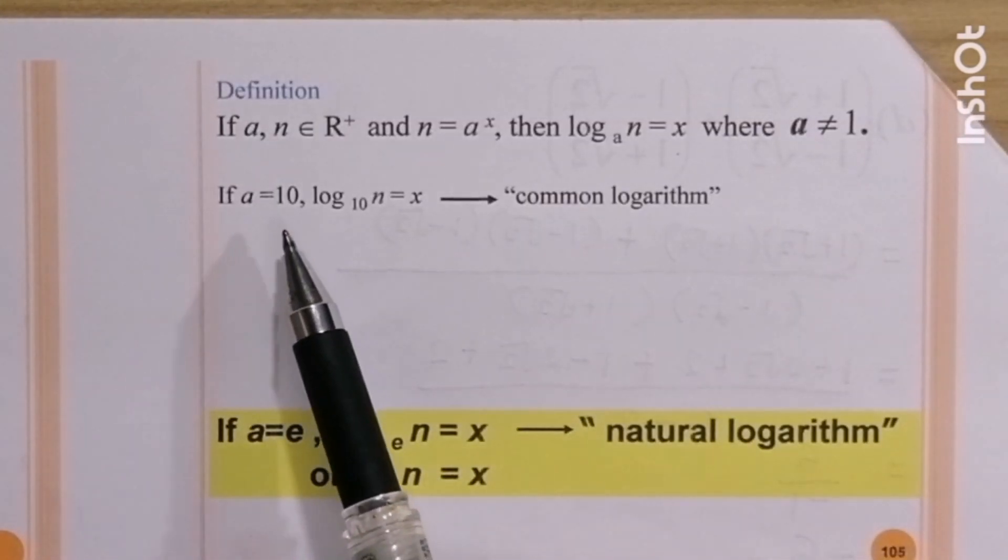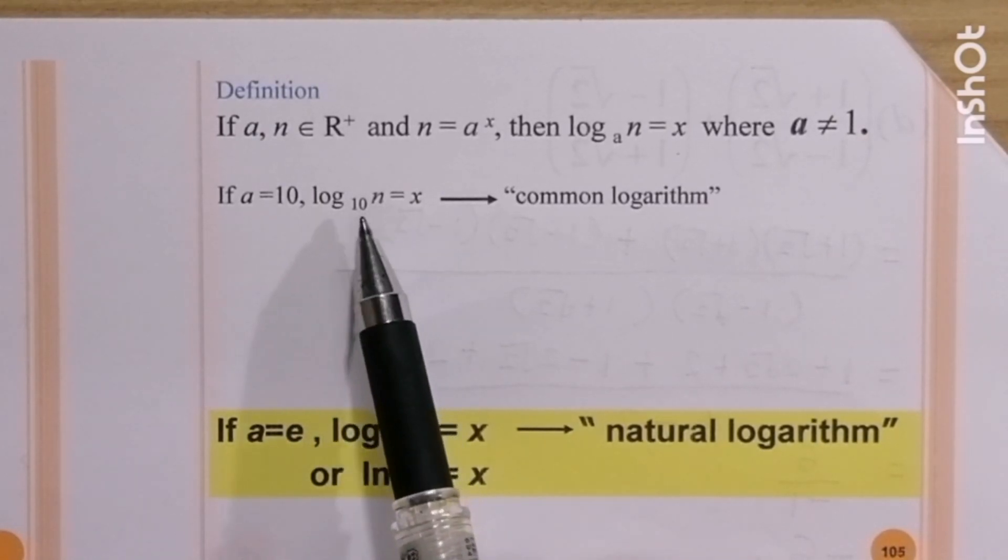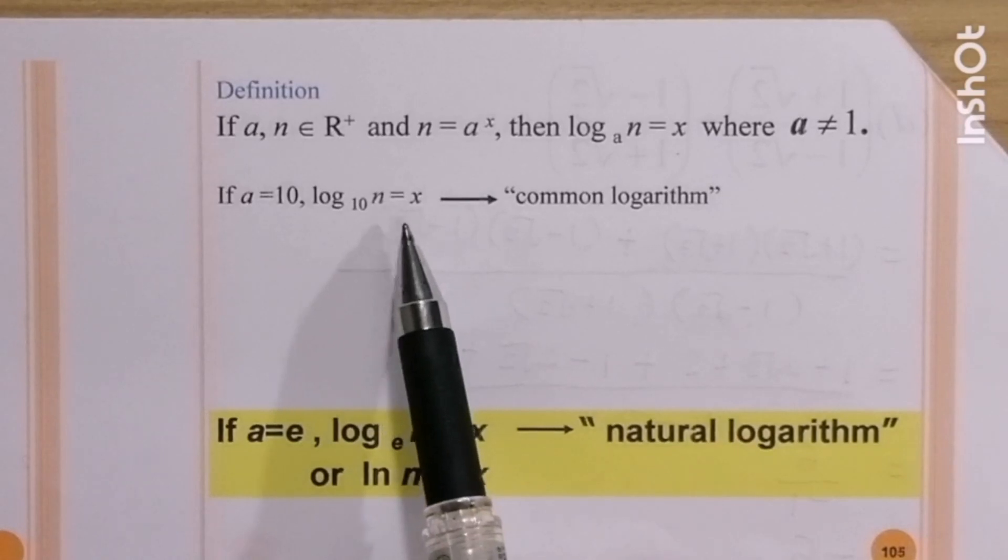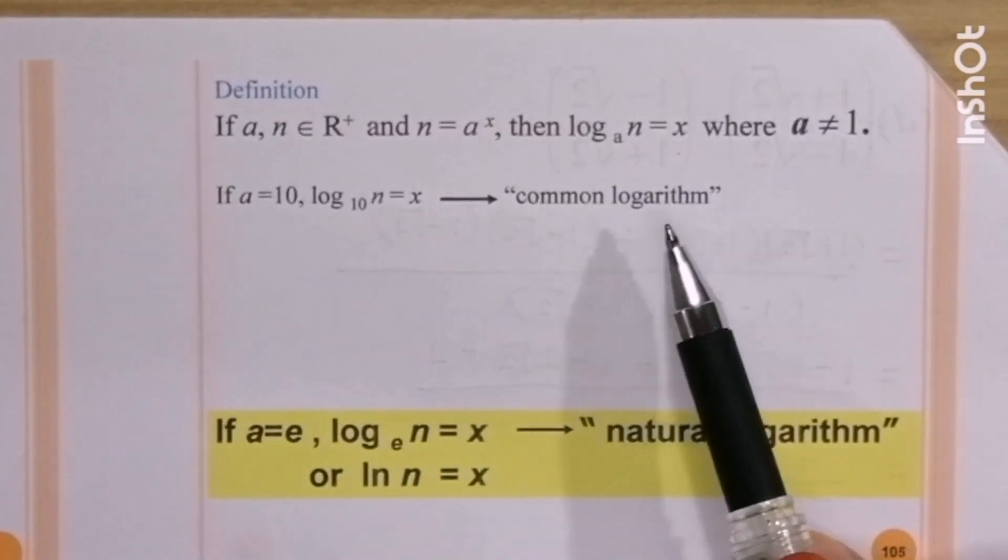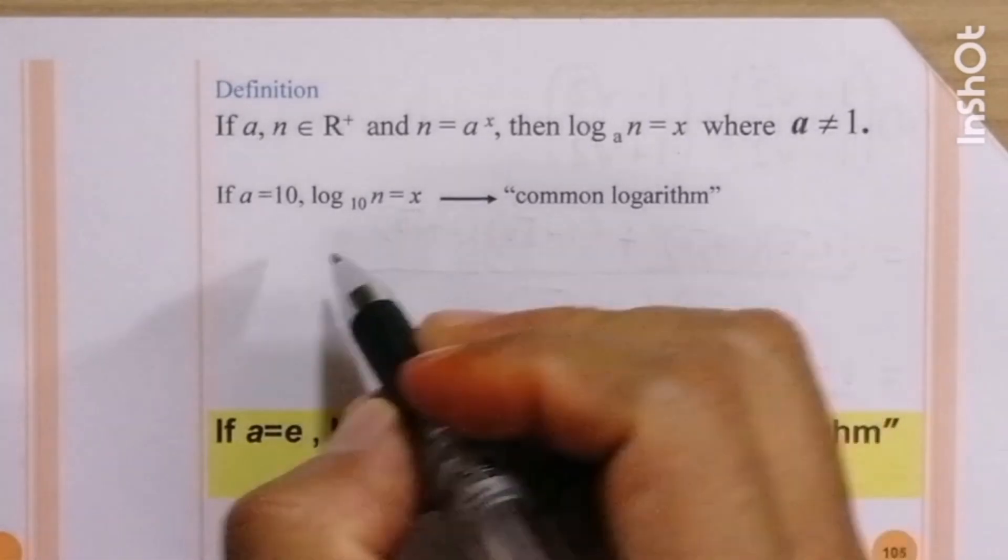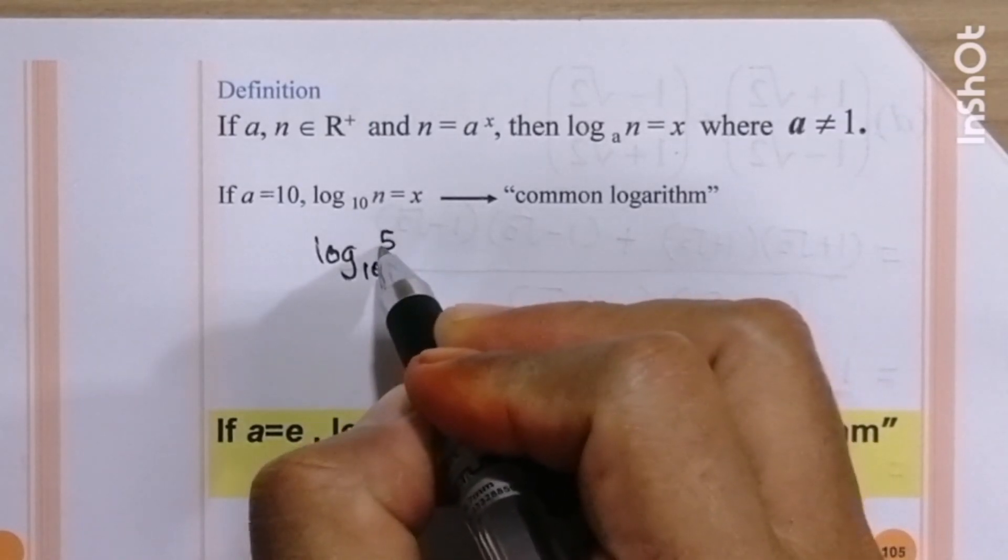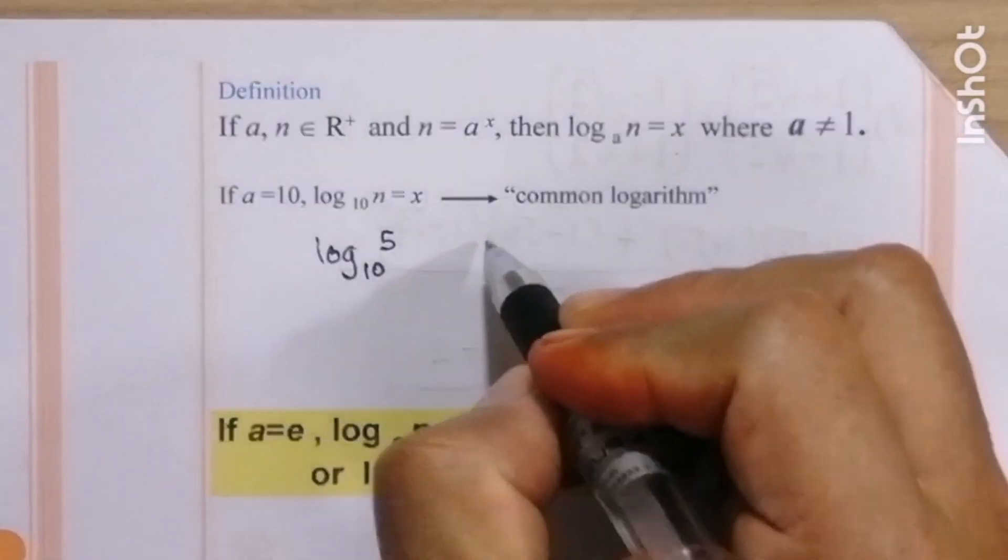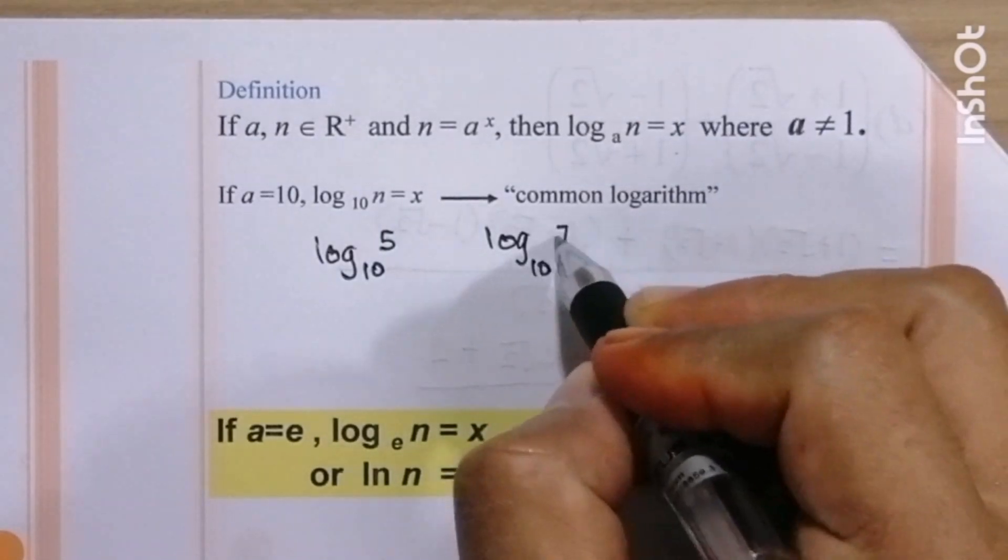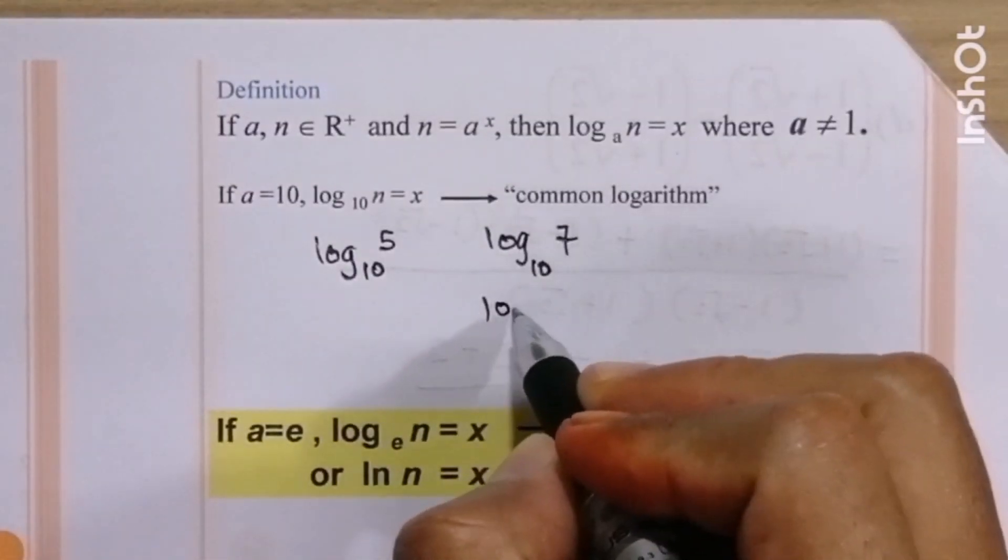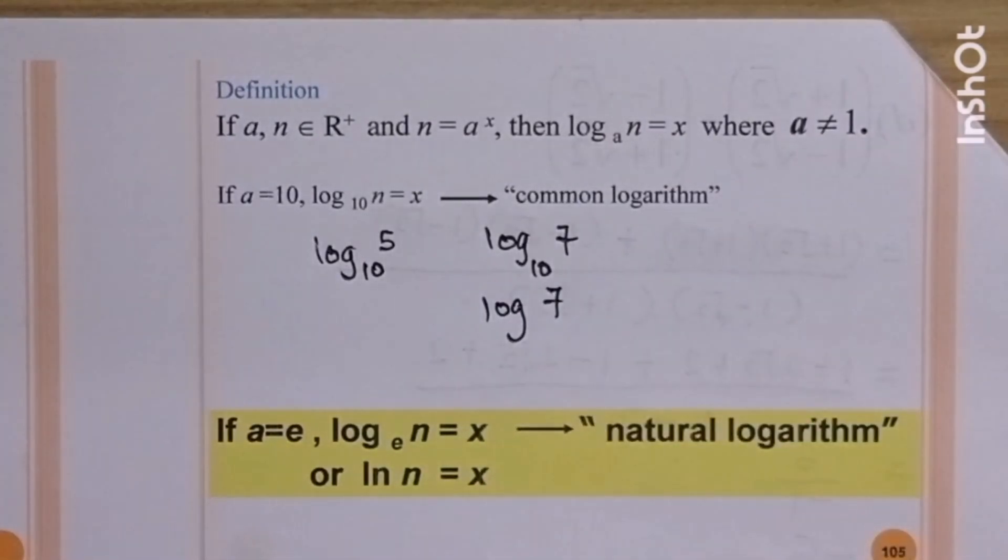If a equal to 10, we get log n base 10 equal to x, or log base 10 we call common log. For example, log base 10 of 5, common log. Log base 10 of 7, this one also common log. Or we can just write log 7, this one also common log.